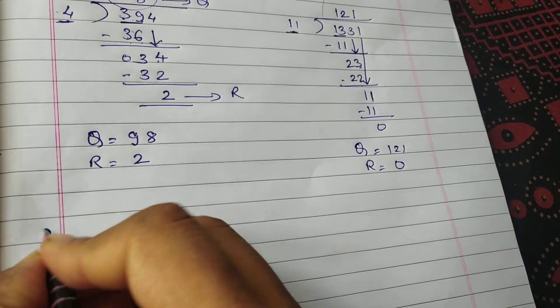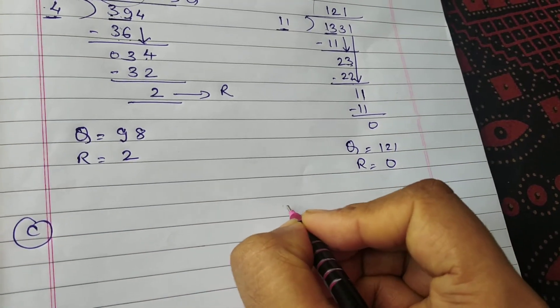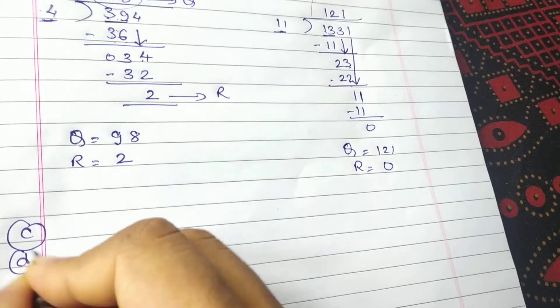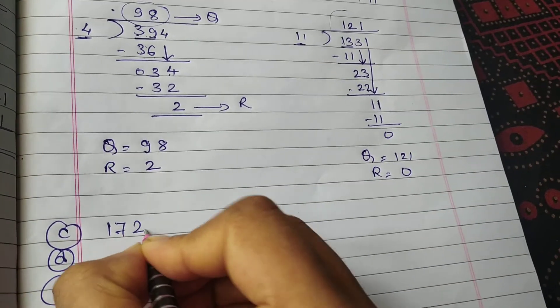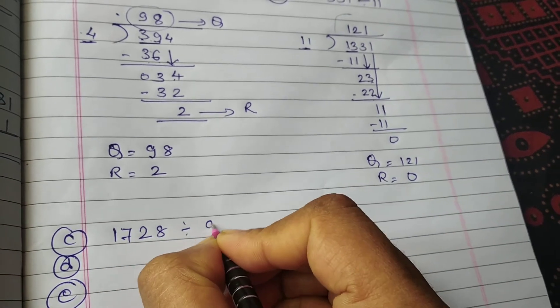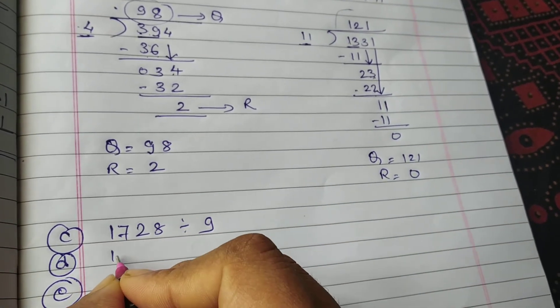Okay, so I am giving you a few more questions that you have to divide. So C, D, E. Okay, only 3. Okay, sada nahin hai. So 1728 divided by 9.